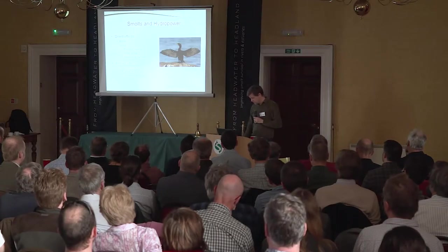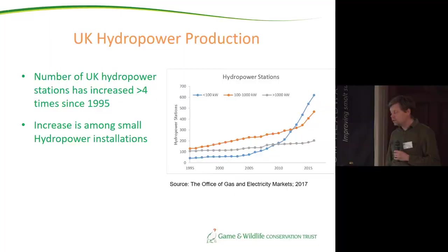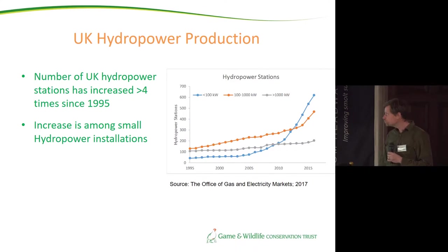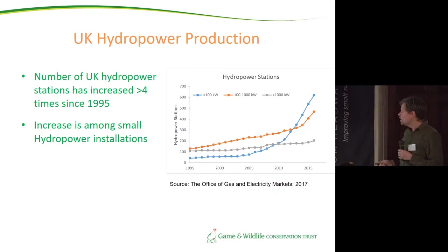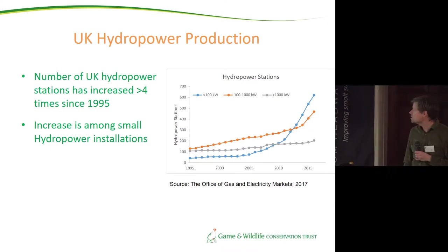Maybe the future isn't so bright for some of the big rivers in developing countries where there are lots of migratory fish species, but here we're speaking about salmon. In the UK there has been a huge development in hydropower stations — in fact they have more than quadrupled since 1995. But looking more closely at the graph, it's primarily the small plants that have exploded: from fewer than 50 in 1995 to over 600 in 2016, partly driven by feed-in tariffs paying people over the odds for the electricity they produce.